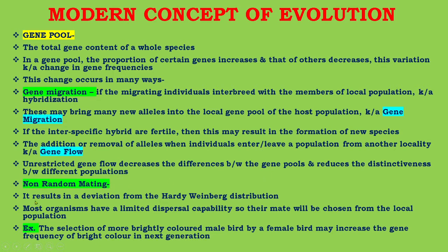Non-random mating results in a deviation from the Hardy-Weinberg distribution. Most organisms have a limited dispersal capability, so their mate will be chosen from the local population. For example, the selection of a more brightly colored male bird by a female bird may increase the gene frequency of bright color in the next generation.